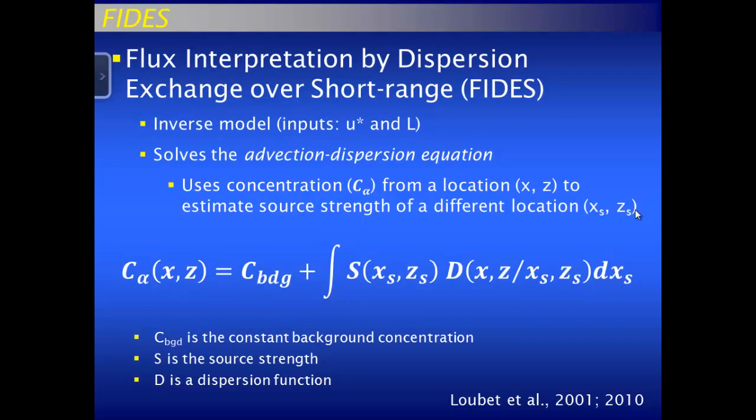The inverse model we use is called FIDES — Flux Interpretation by Dispersion Exchange over Short ranges. FIDES uses the advection-dispersion equation, which is a classical fluid mechanics equation, and it solves it. We know several of these variables already: the concentration from the radiellos at various sites, the background concentration which is very small — usually less than 50 ppb — and a dispersion function derived from the source geometry, turbulent conditions, and wind characteristics. That just leaves the source strength, which is the emissions we're looking for.